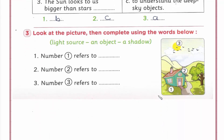Question number three: Look at the picture then complete using the words below. هنبص عالصورة بعدين complete sentence using the words. The words are: light source, an object, a shadow.